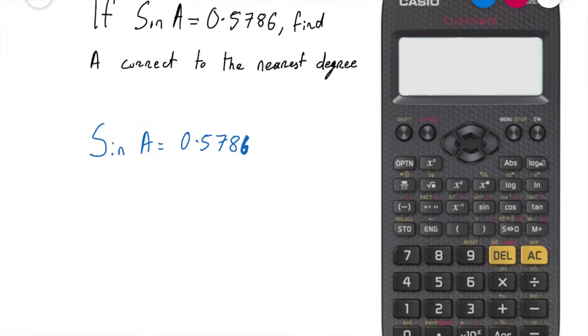So in this case it's going to be shift sine 0.5786 and then I press equals and then I'm going to get an answer of a lovely long decimal answer now. 35.35213 and it just goes on and on and on.